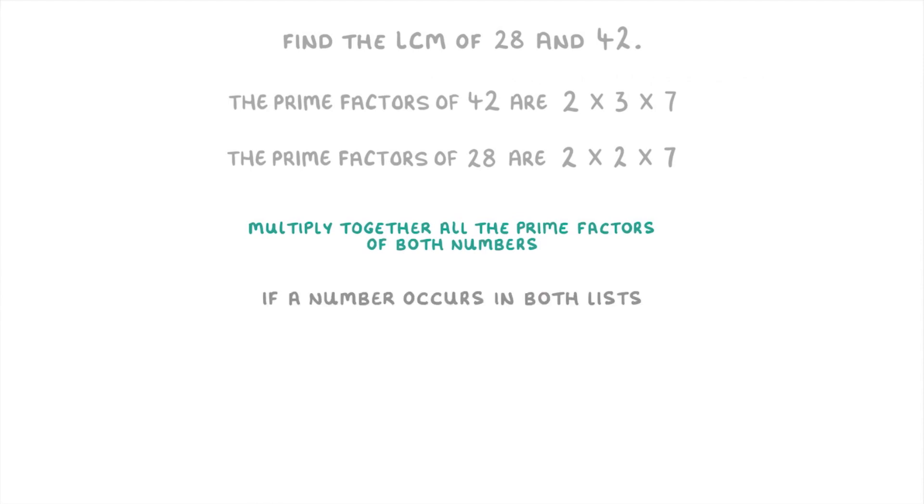But importantly, if a number occurs in both lists, we only count it once. So because there are two of these twos here, we'd only count one of them, and we can cross the other one out. Whereas we'd include both this two and this three. And then because the sevens occur in both lists, we again only include one of them. So we can cross one of them out. And so overall, we end up doing 2 × 2 × 3 × 7, to get 84, which would be our lowest common multiple.